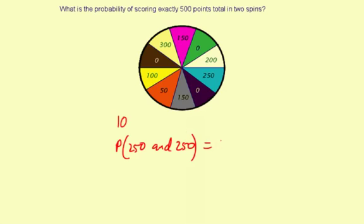That's going to be equal to 1/10 for the probability of 250, and then times 1/10 for the other probability of 250.